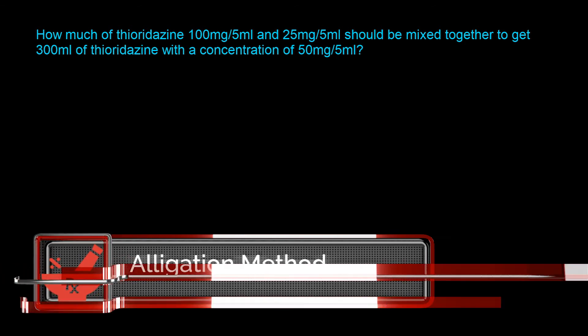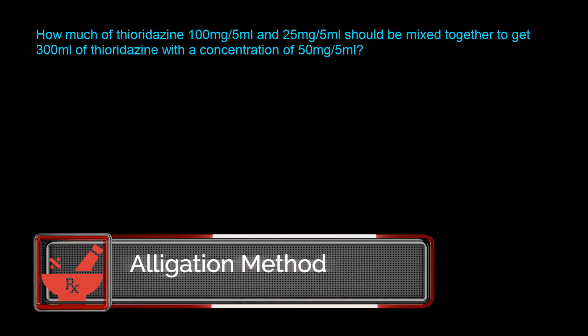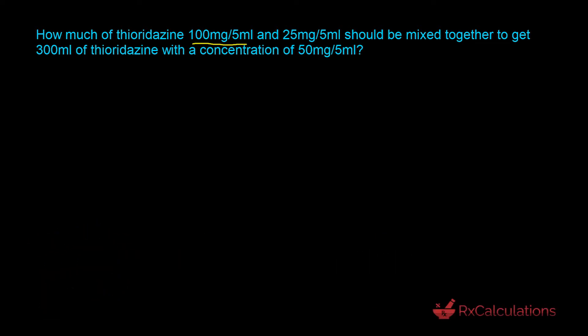The first thing we need to do is take the concentrations — 100 milligrams per 5 milliliters, 25 milligrams per 5 milliliters, and 50 milligrams per 5 milliliters — and convert them to percentage strength. This makes it more manageable when using the alligation method. We need to identify the higher concentration, the lower concentration, and the desired concentration, which is the 50 milligrams per 5 ml.